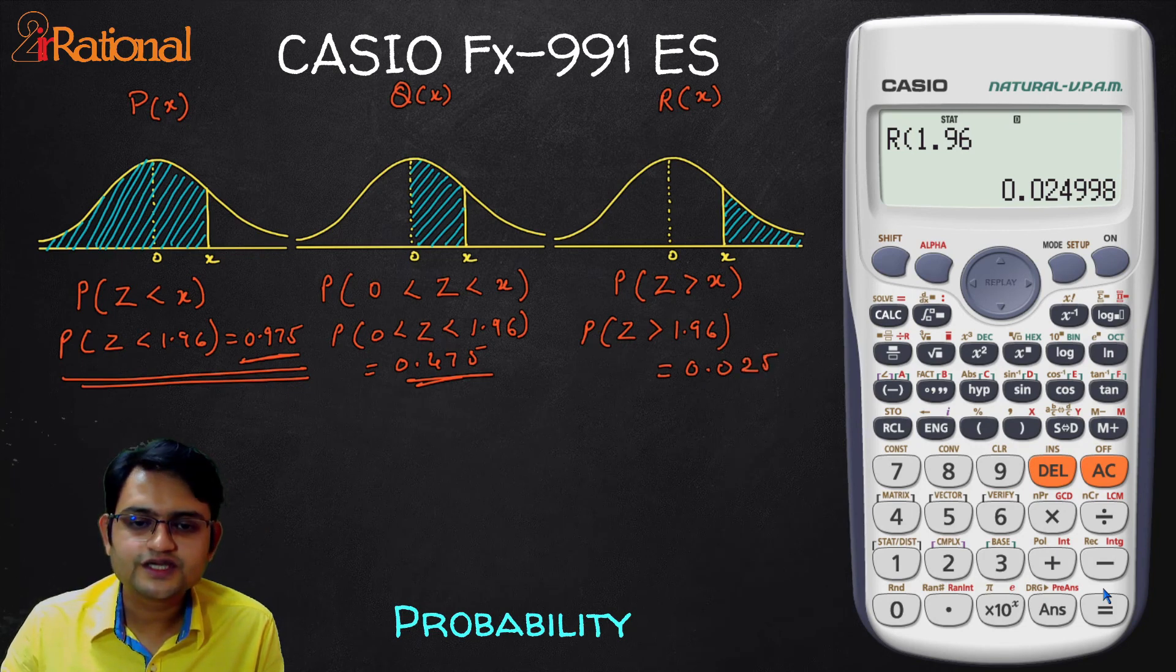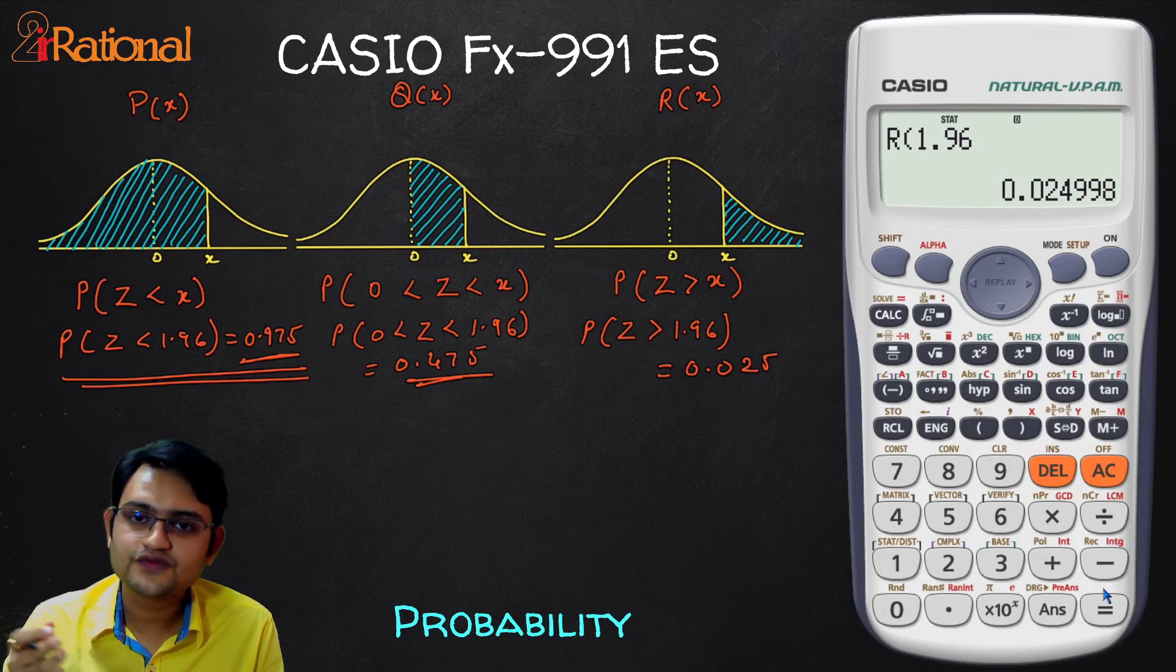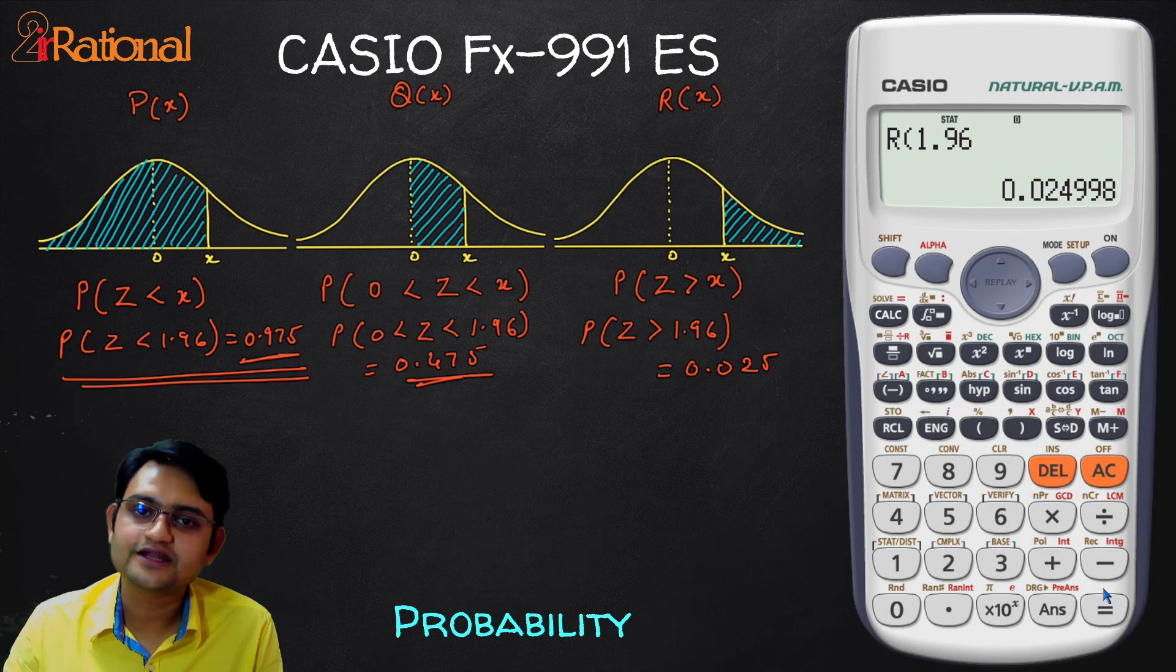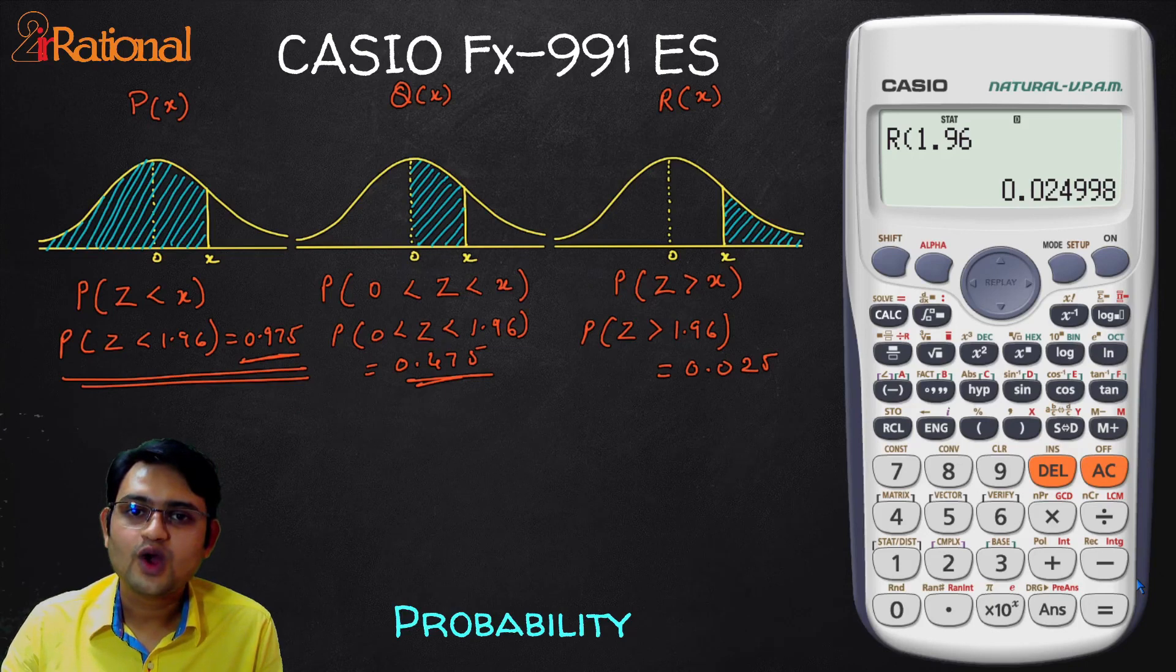So using this, you can find any standard normal distribution probability, whether you are going from minus infinity to that value or going from 0 to the value or finding greater than probabilities. If you like this video, please like and subscribe and do comment on what functions would you like more videos on. See you in the next one.